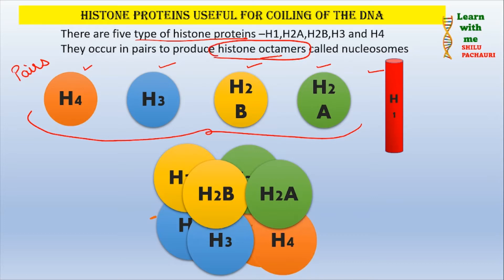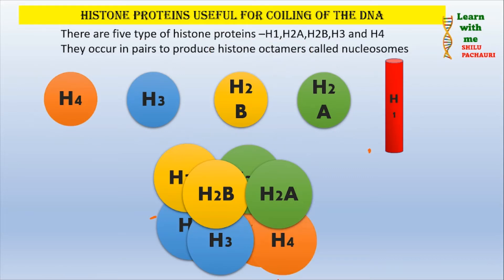By being present in pairs, these form histone octamers. Now why are they called octamers? Octa means 8, so 8 units are attached — 1, 2, 3, 4, 5, 6, 7, and one more at the back — making 8 in total. That is why we call it an octamer.